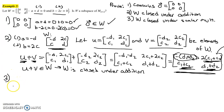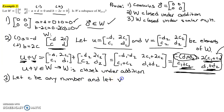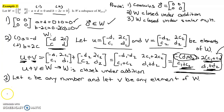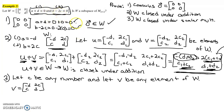The same applies to closure under scalar multiplication. To prove that, we let K be any number and V be any general element of W — not one specific matrix, but a general element. If V is in W, it must have the required form: [-D, 2C; C, D], where A equals negative D and B equals 2 times C, thanks to the conditions defining W.